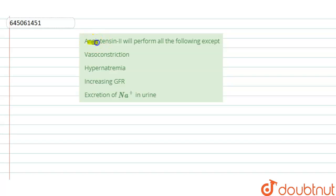Here angiotensin II will perform all the following except. So here angiotensin, this hormone is formed by the angiotensin I.